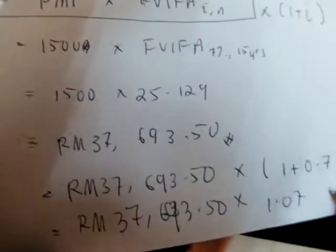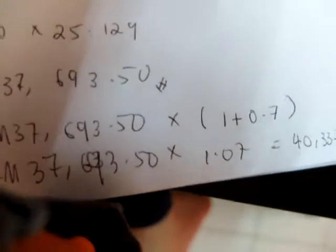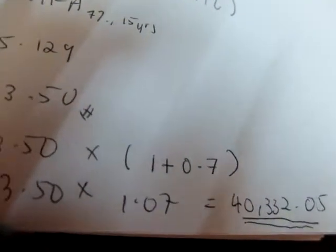So you get 40,332.05. So this is how much you get if it's an annuity due. Alright, that's great.